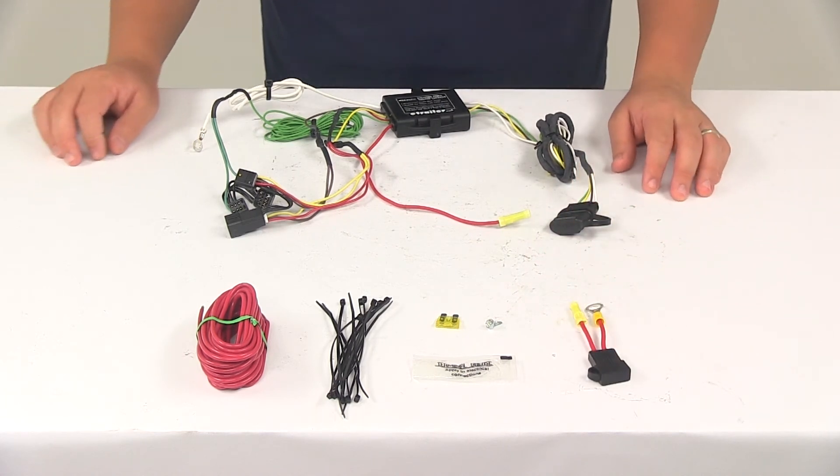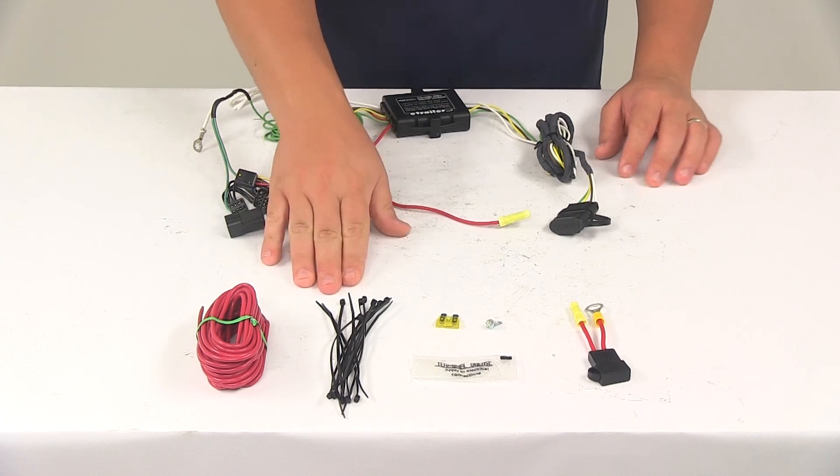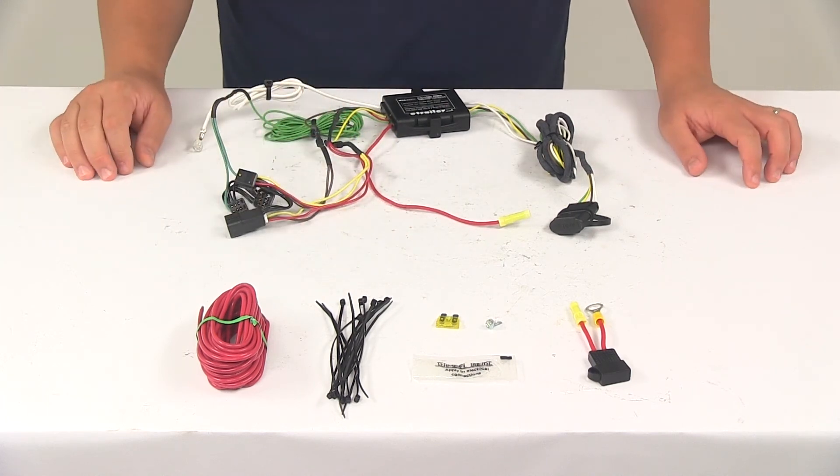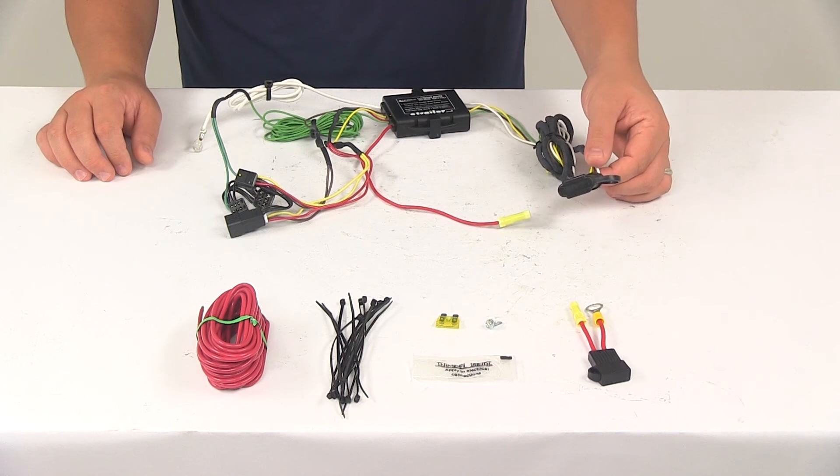Once you have all that done, you can secure any excess or slack in the wiring with the included cable ties. And then once your installation is complete, the four-way connector is going to be stowed beneath the vehicle near the trailer hitch.